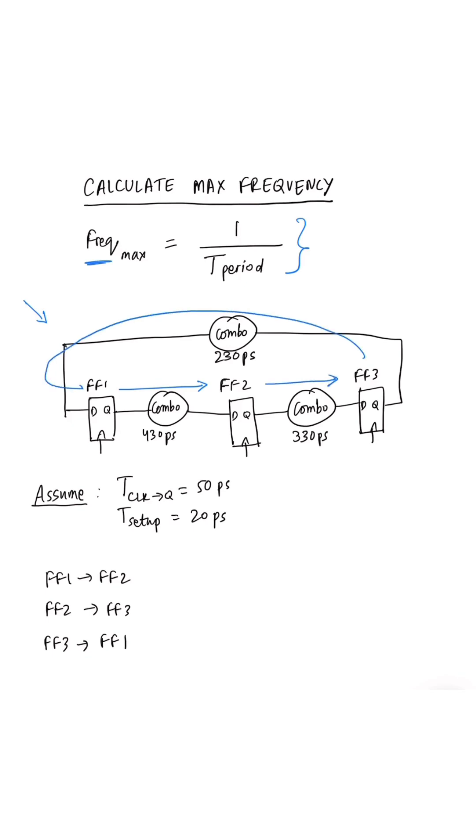We know that for each timing path, within one clock period, we must fit the clock to Q delay, the combinational delay which consists of cell delay and wire delay, as well as the setup time of the receiving flop.